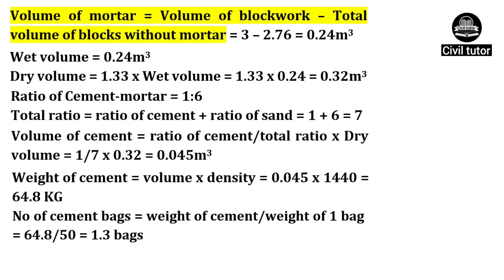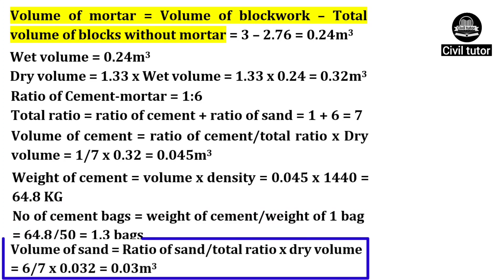Finally, the volume of sand is calculated using the formula: ratio of sand upon total ratio, multiplied by dry volume of mortar. The ratio of sand is taken as 6, total ratio is 7, and dry volume is 0.32. So on substituting these values, volume of sand will be equal to 0.03 cubic meters.